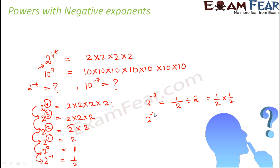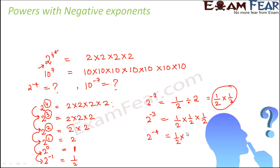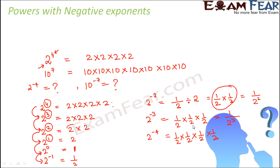That means 2 to the power minus 2 will be equal to 1 by 2 into 1 by 2. Similarly, 2 to the power minus 3 will be 1 by 2 into 1 by 2 into 1 by 2. And 2 to the power minus 4 would be 1 by 2 into 1 by 2 into 1 by 2 into 1 by 2. If you look more closely, this is 1 by 2 to the power 2; similarly, 1 by 2 to the power 3 because you are multiplying 2 three times in the denominator; and here it would be 1 by 2 to the power 4.